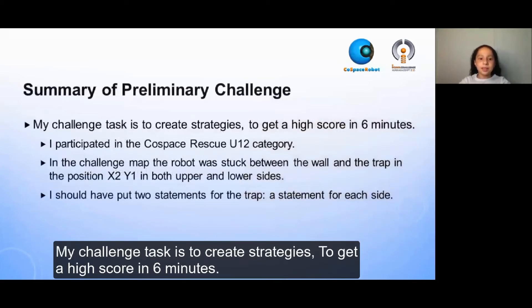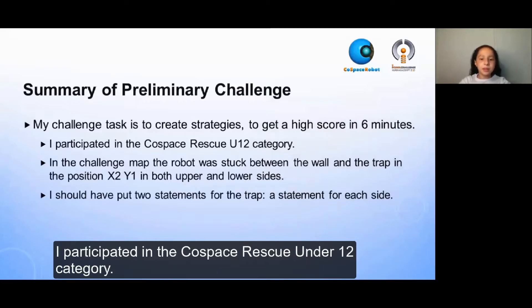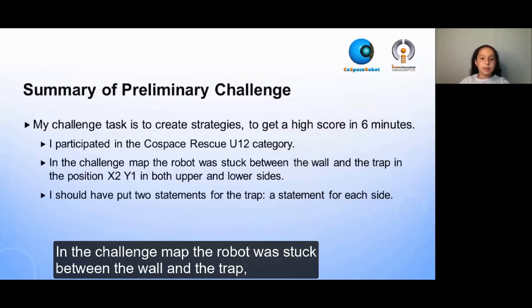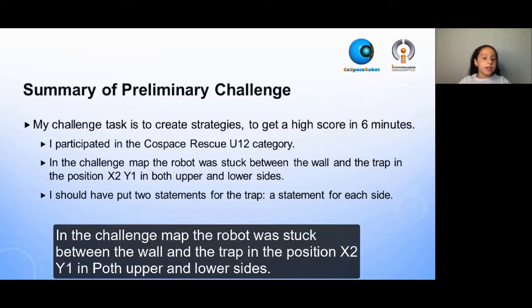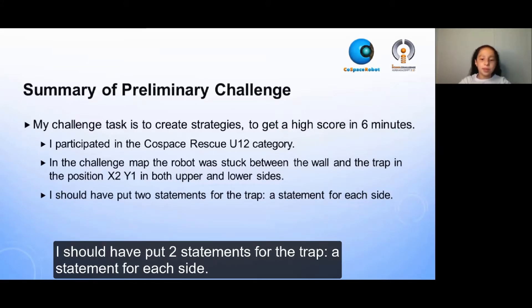My challenge task is to create strategies to get a high score in six minutes. I participated in the CoSpace Rescue Under 12 category. In the challenge map, the robot was stuck between the wall and the trap in position X2, Y1 in both upper and lower sides. I should have put two statements for the trap, a statement for each side.